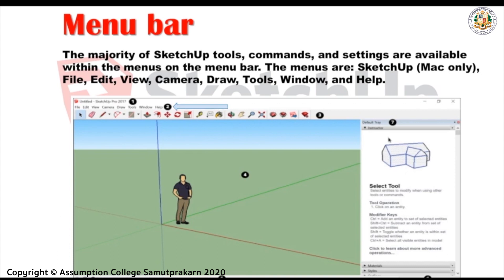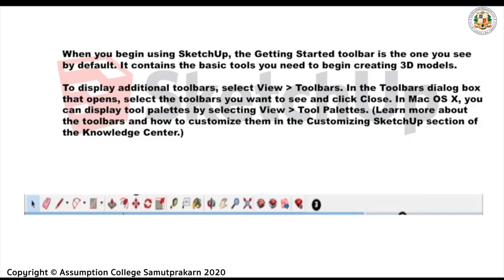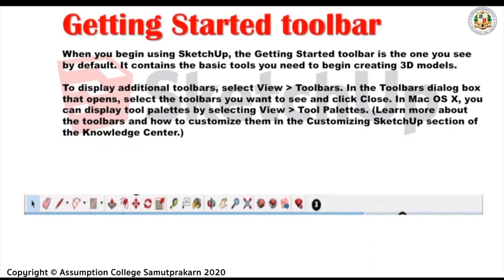The menus are — if you are using Mac — File, Edit, View, Camera, Draw, Tools, Window, and Help. Now let's go to the Getting Started toolbar. When you begin using SketchUp, the Getting Started toolbar is the one you see by default. It contains the basic tools you need to begin creating 3D models. To display additional toolbars, select View > Toolbars. In the Toolbars dialog box that opens, select the toolbars you want to see and click Close.